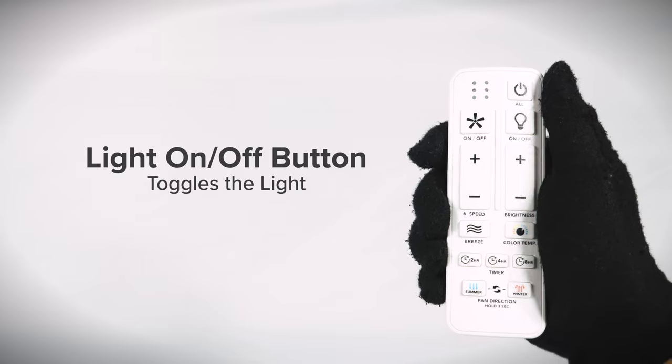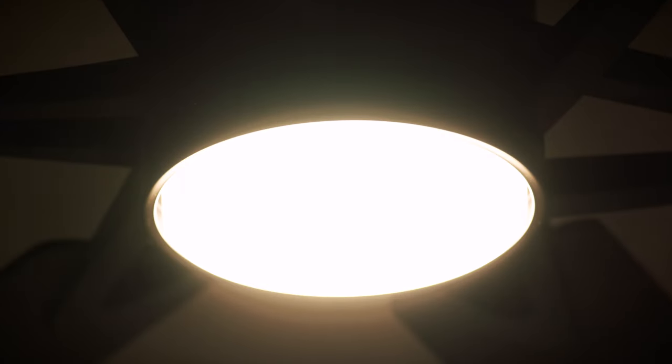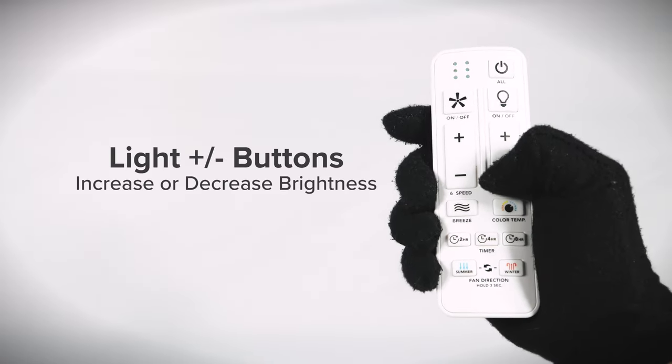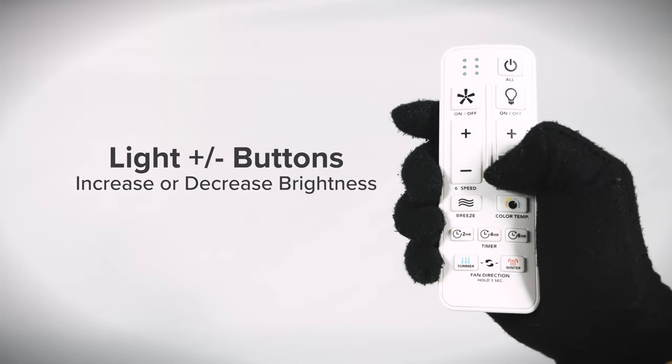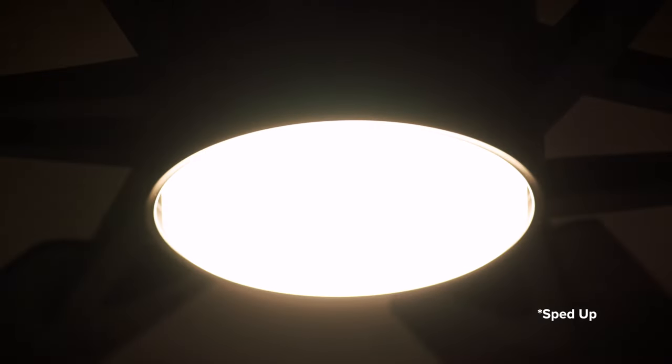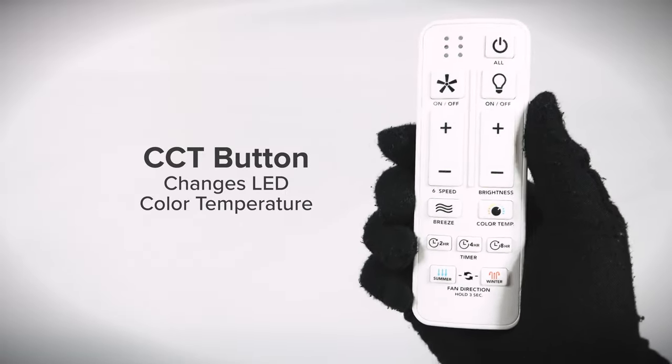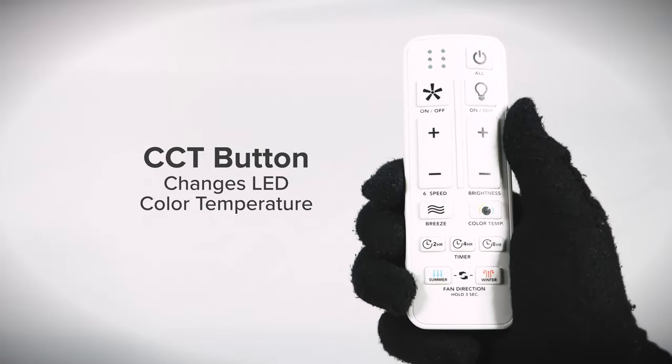Press the light button to toggle just the light on or off. Hold the dimmer plus or minus buttons to slowly increase or decrease the brightness of the light.